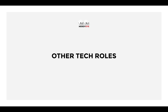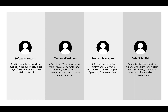There are other tech roles worth mentioning. The first is the software tester — as a software tester you'll be involved in the quality assurance stage of software development and deployment. Before an application is deployed, you test it for bugs, validate the software, and if it passes the testing process, you ship it out to users. Another role is the technical writer — a technical writer transforms complex and technically difficult materials into clear and concise documentation, producing software or technology documentation that helps people easily understand and use a particular application.